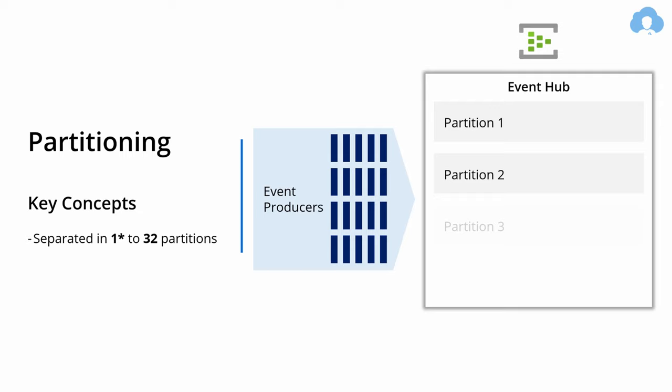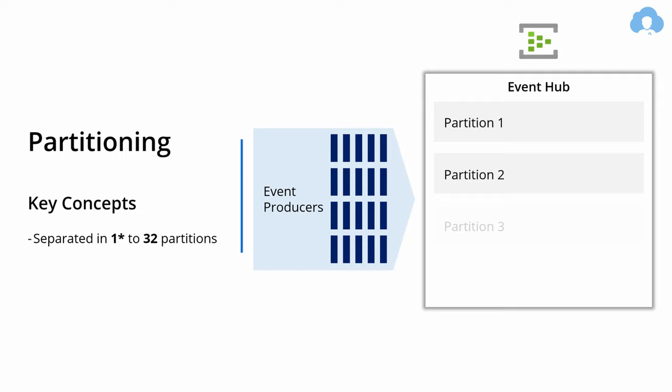Each Event Hub is partitioned. You can have from 1 to 32 partitions. I marked one as a star because everywhere in the documentation you'll find information that the minimum is 2, although if you go to the portal you will be able to choose a minimum of one partition and it will work just fine. You choose the number of partitions when creating the Event Hub, and it's not changeable after creation. So it's good to decide how many partitions you need beforehand, otherwise you're going to need to recreate the Event Hub later on.